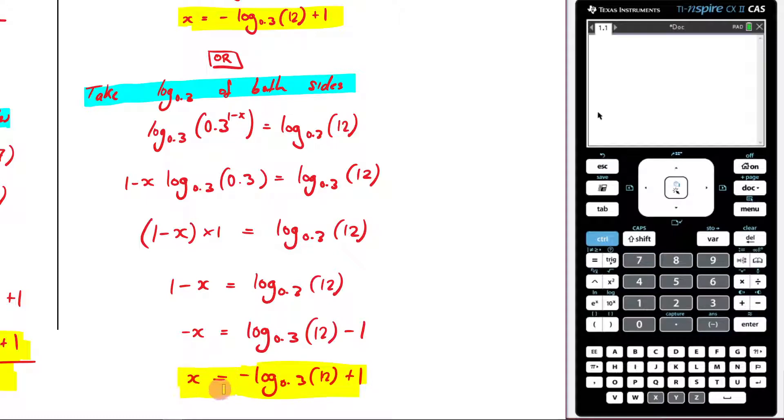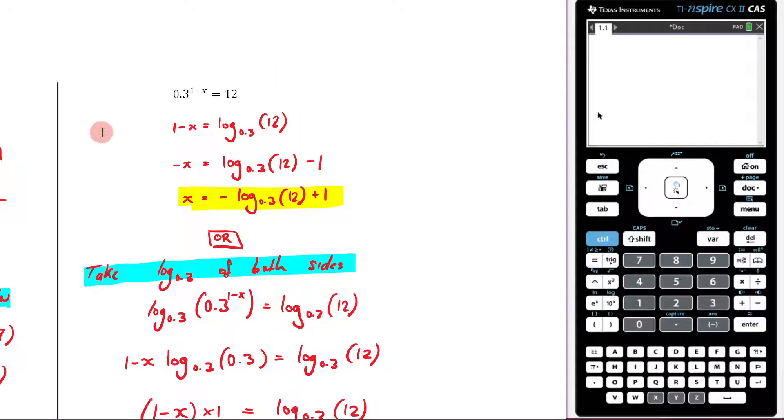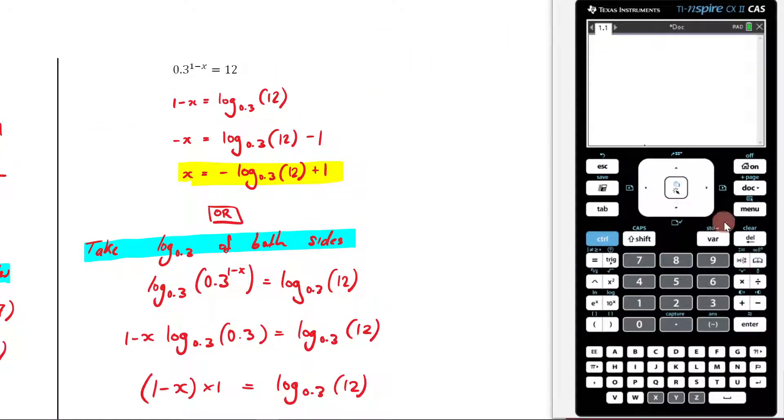Now, if you answer this on your CAS calculator, what are you going to get out? Well, if I come here to the question itself. If I went menu 3, 1, and then typed in 0.3 raised to 1 minus x equals 12 comma x and hit enter, it's giving me an exact value there. So let's double check that that's the exact value I'll get out here. It gives me the exact value.